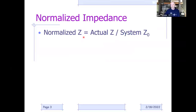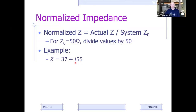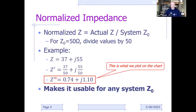The letter Z represents complex impedance—the resistive and reactive component. For a 50-ohm environment, we simply divide all values by 50. For example, if your analyzer reports 37 ohms resistive plus an inductive 55 ohms reactance, divide each term by 50 to get a normalized impedance—represented by a prime symbol—of 0.74 plus j1.1. Normalizing to the system impedance makes the Smith chart usable for any system impedance, and this normalized impedance is what we plot on the chart.